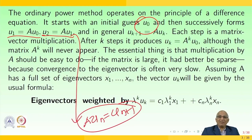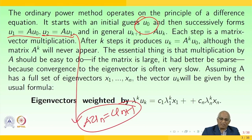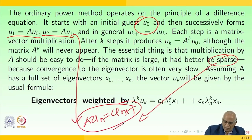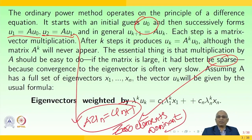Each step is a matrix-vector multiplication. After k steps it produces uₖ = Aᵏu₀, although the matrix Aᵏ will never appear explicitly. The essential thing is that matrix multiplication by A should be easy to do. If the matrix is large, it had better be sparse — meaning zero elements are dominant — because convergence to the eigenvector is often very slow.